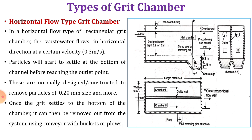Horizontal flow grit chambers are normally designed to remove particles of 0.2 mm size and more, so larger-size particles are removed. Once the grit settles to the bottom of the chamber, it can then be removed from the system using a conveyor with buckets or plows.